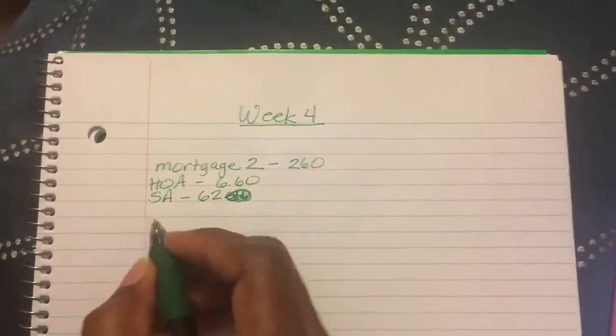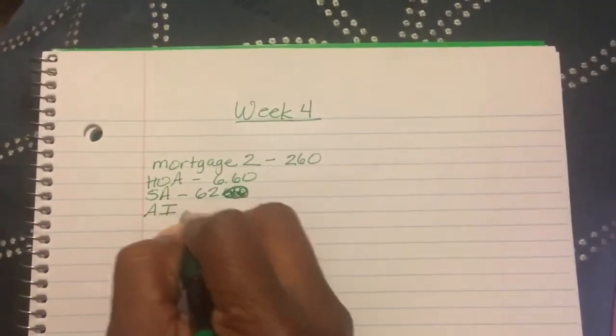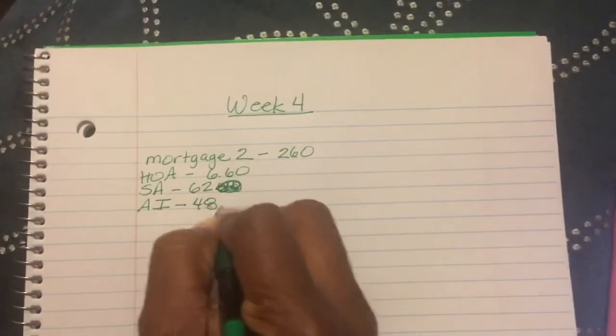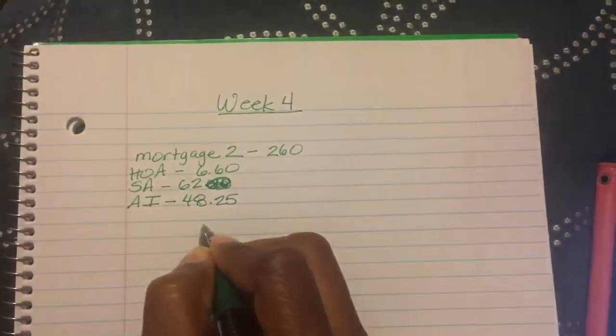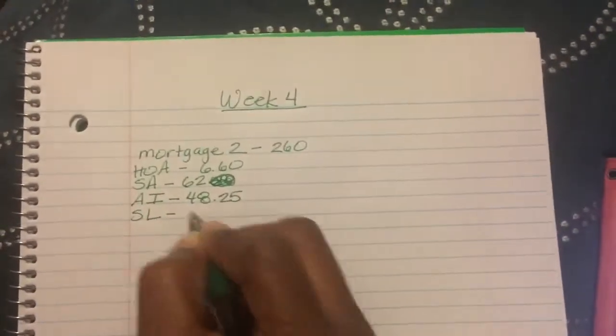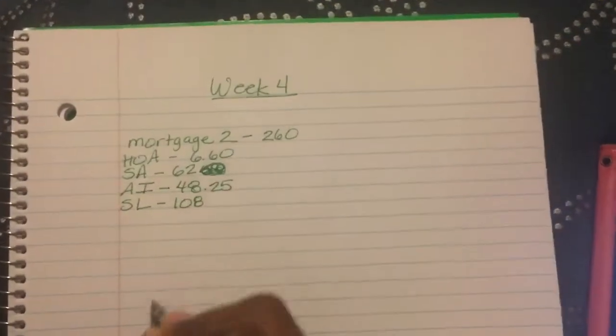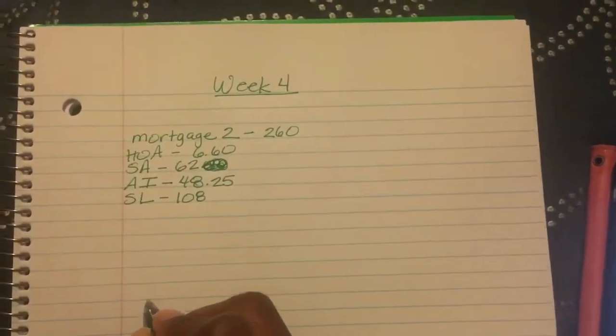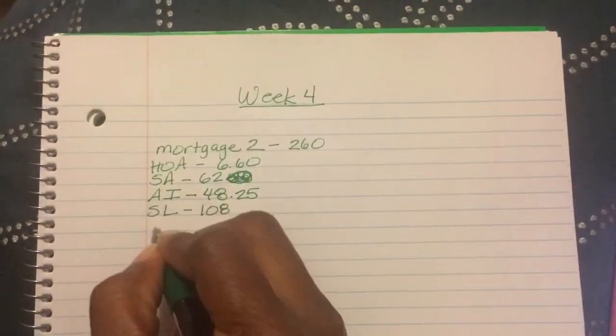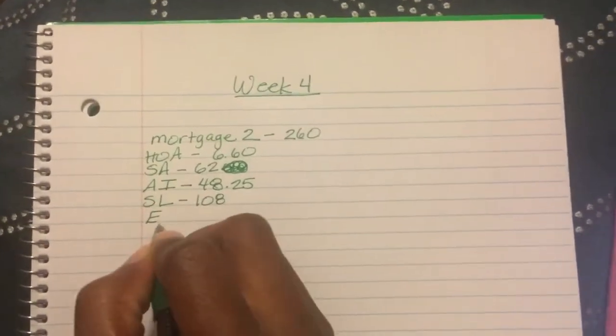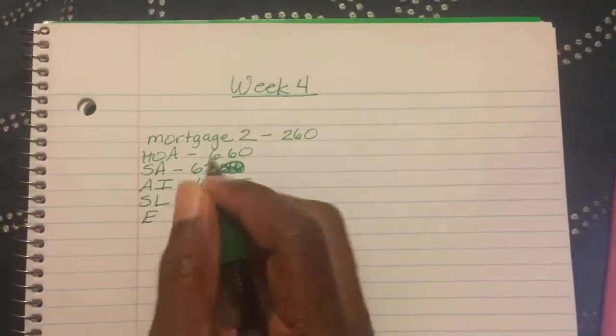I have the auto insurance for $48.25. Student loans, $108. Electric bill - I'm going to have to explain this to you once I get here.